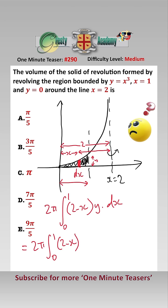the integral between 0 and 1 of 2 minus x times x cubed dx, which equals 2 pi, the integral between 0 and 1 of 2 x cubed minus x to the 4 dx,